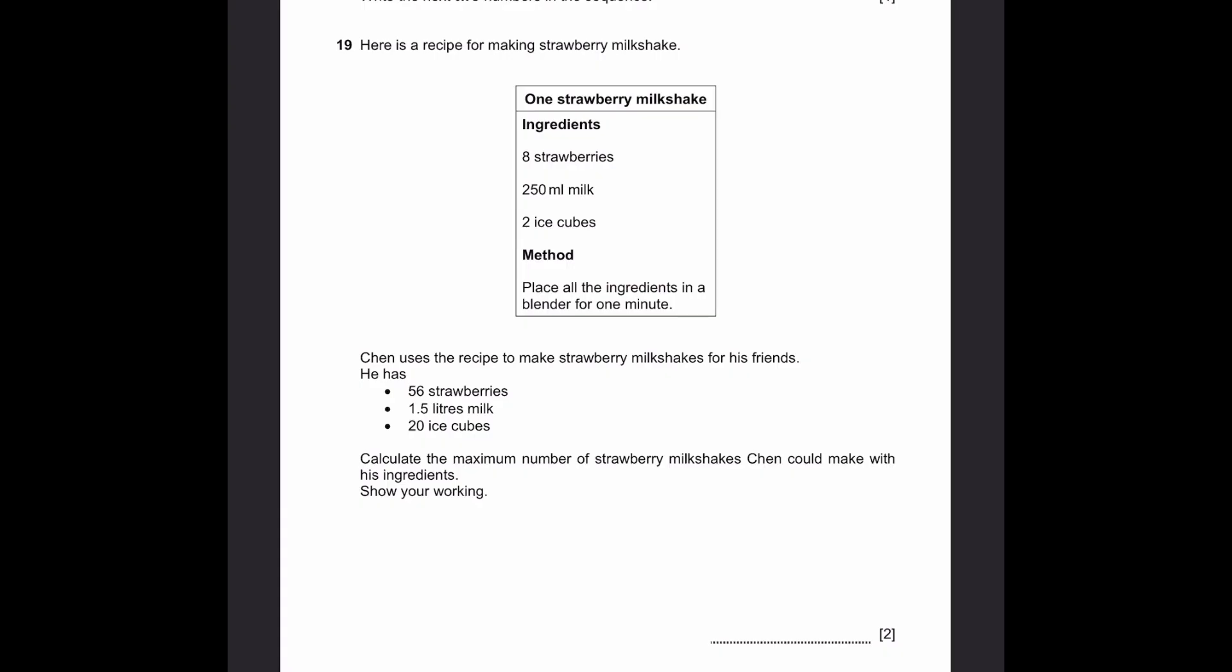Question 19. Here's a recipe for making strawberry milkshake. The ingredients and method are given here. Trent uses the recipe to make strawberry milkshakes for his friends. He has 56 strawberries, 1.5 liters milk, and 20 ice cubes. Calculate the maximum number of strawberry milkshakes Trent would make using his ingredients.